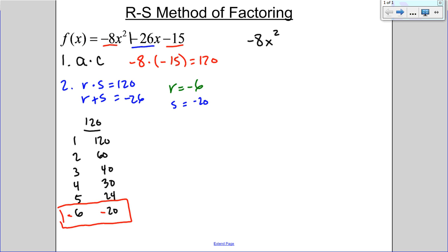But what I'm really doing with the RS method is I'm splitting up this B term. From negative 26x, I'm going to make it a negative 6x with my R and then make it a negative 20x with my S. So I'm splitting up this B value into R and S.